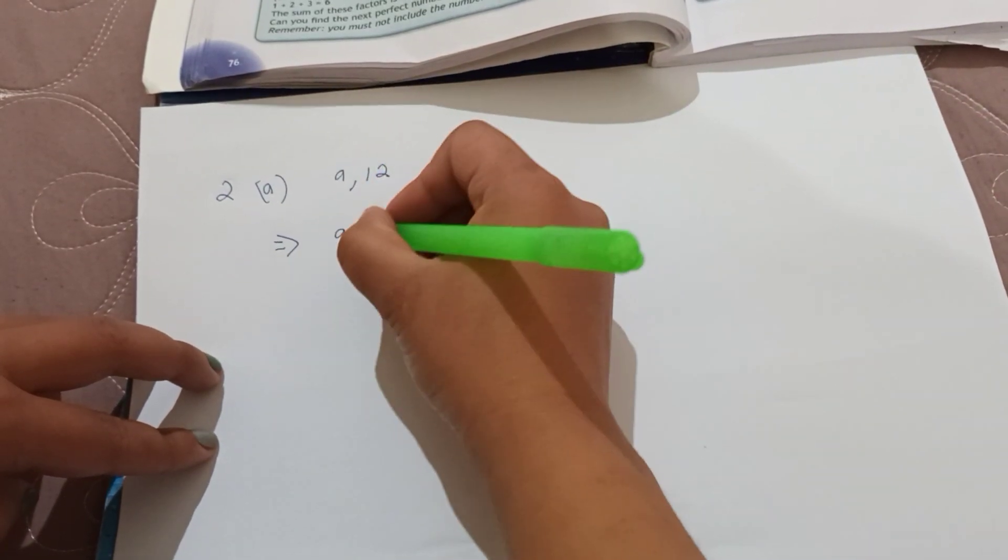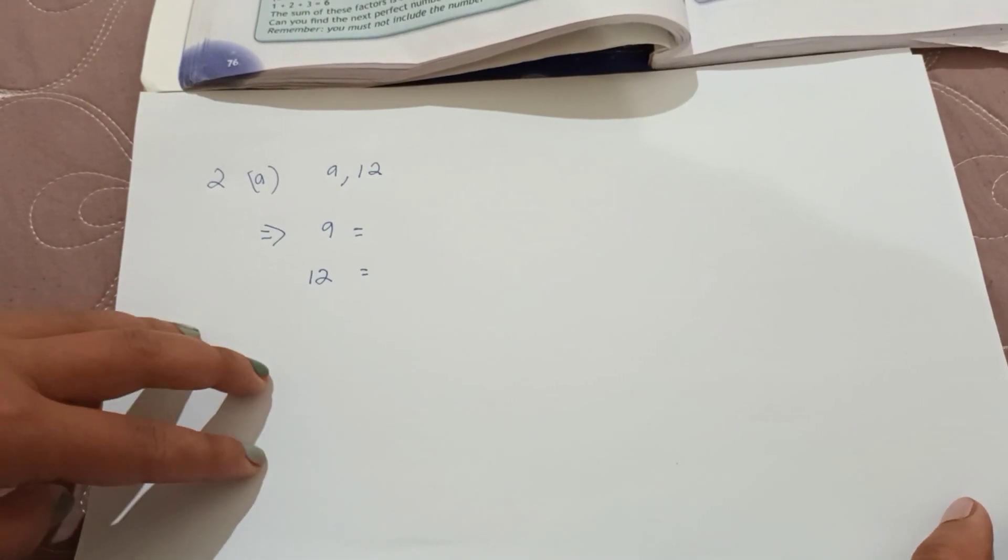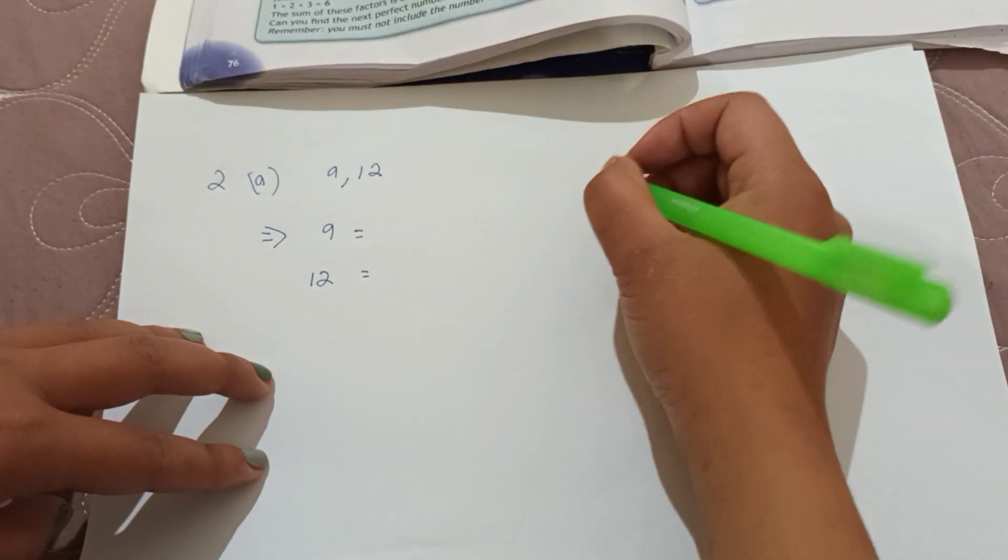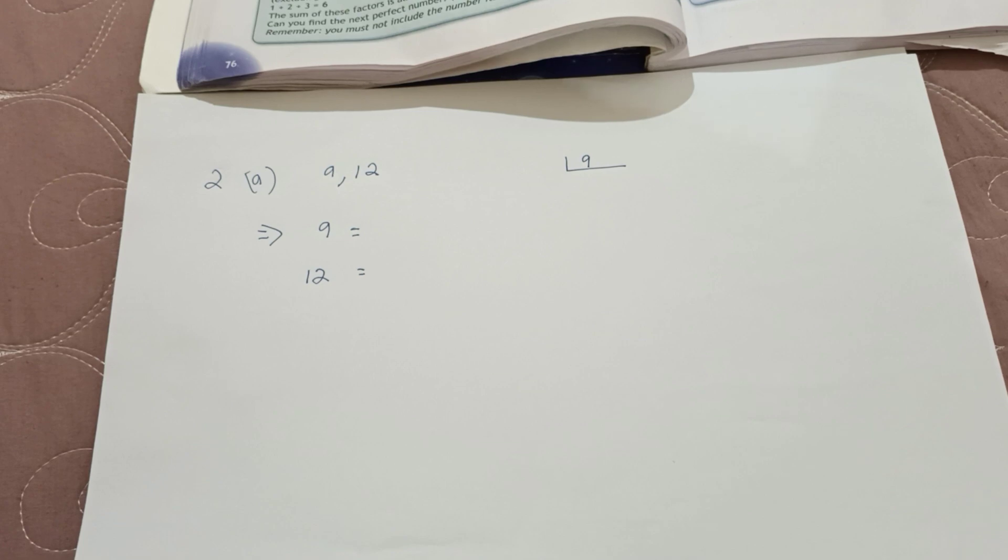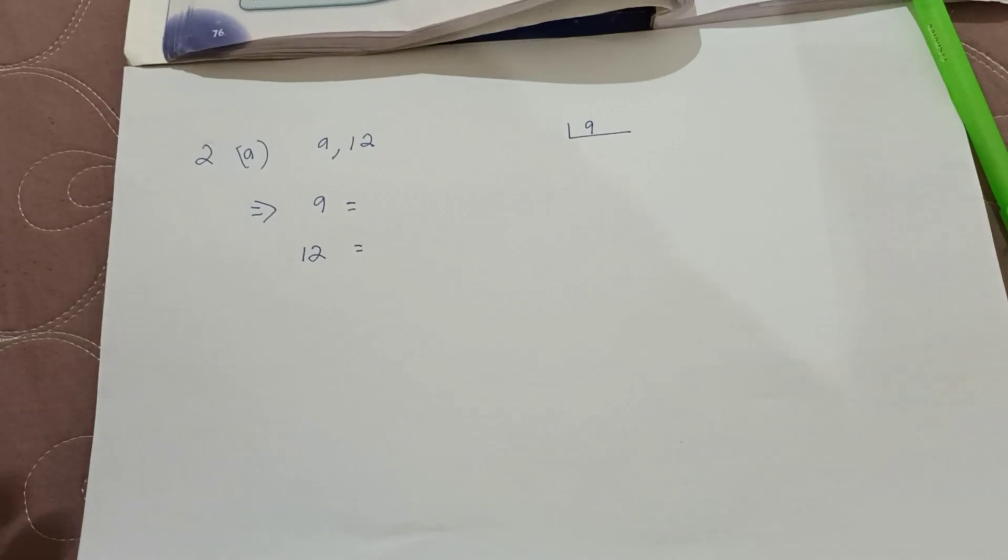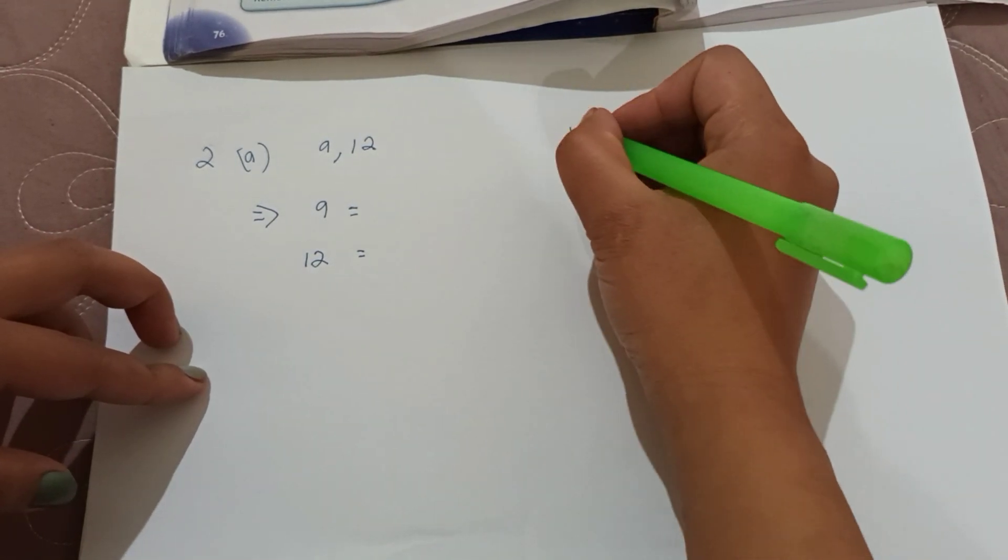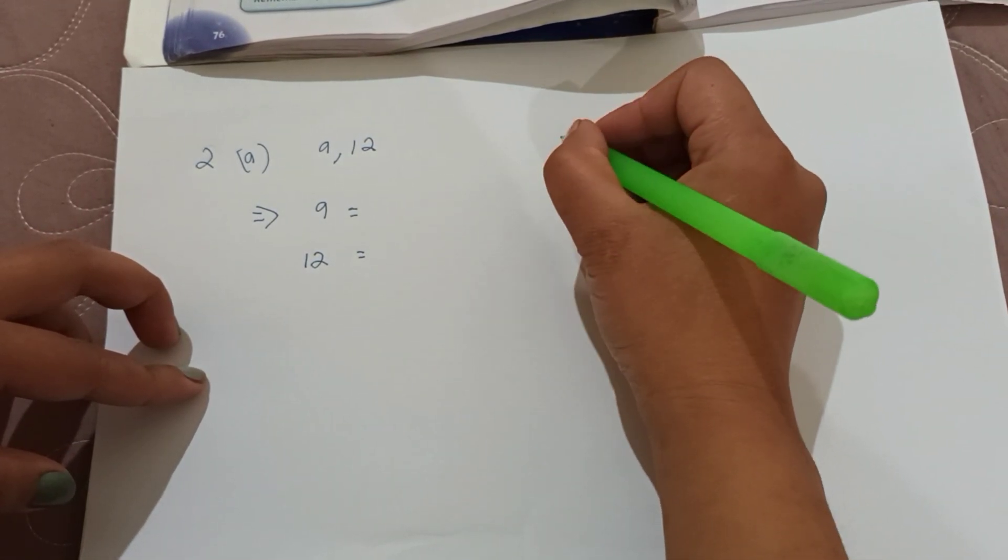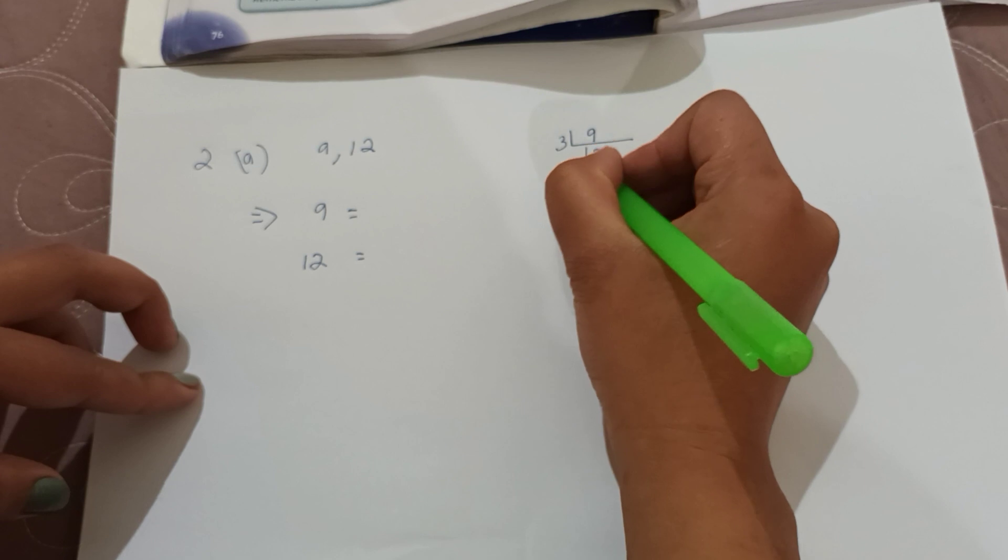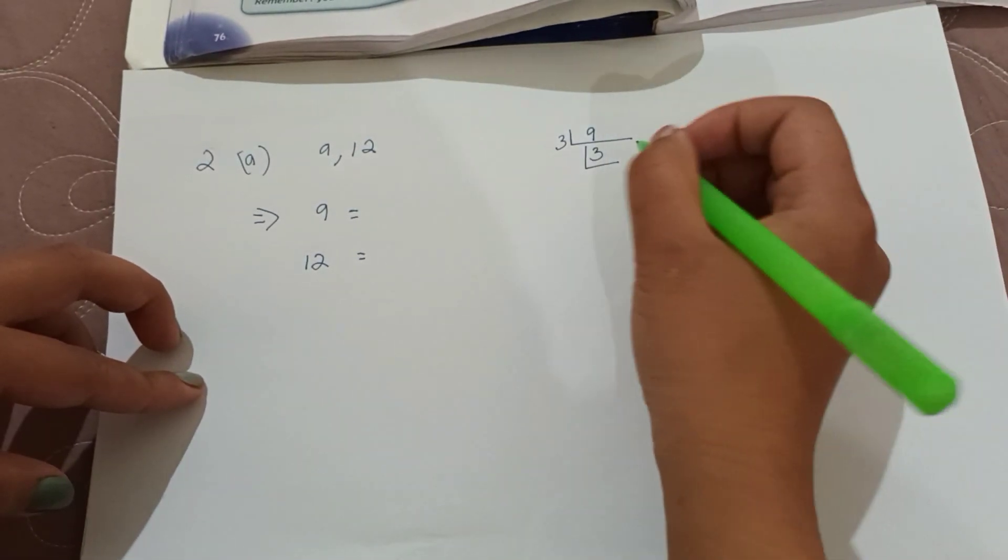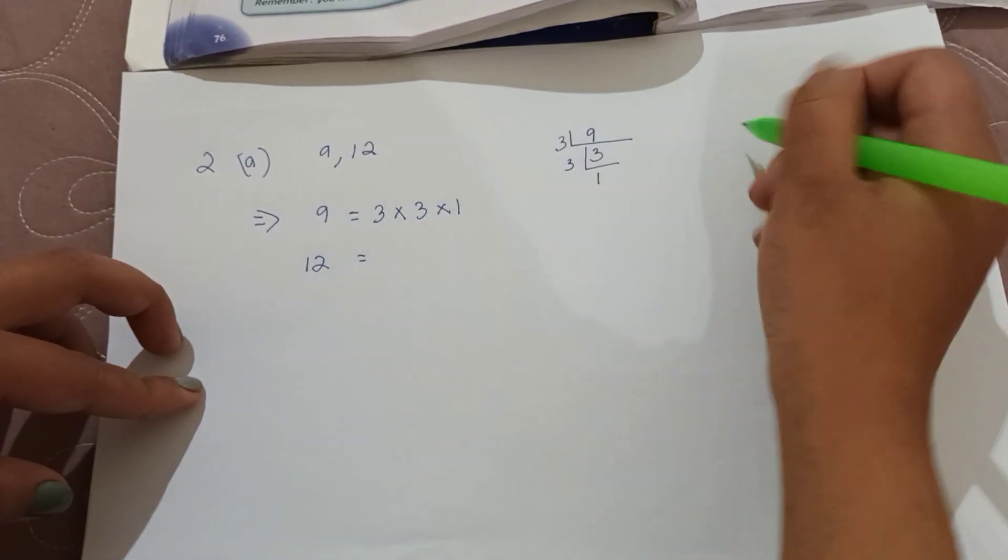For 9 and 12, in prime factorization method you write 9 is equal to, 12 is equal to. Prime factorization method is to divide the number. 9, divide it by number 3. 9, 3 times 3. 9 divided by 3 is 3. 3, 3 times 1 is 3. So 9 is 3 into 3 into 1.